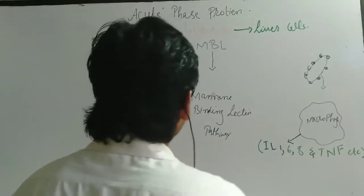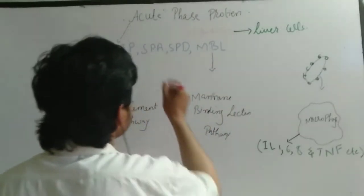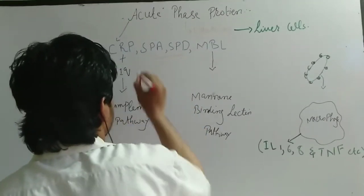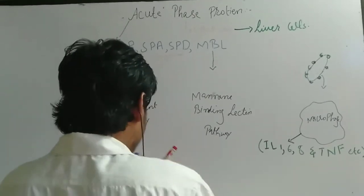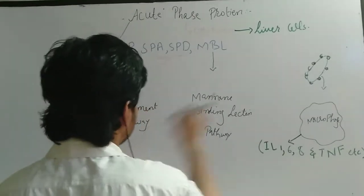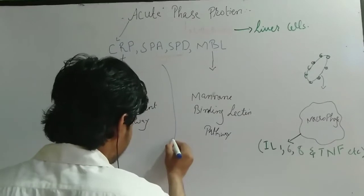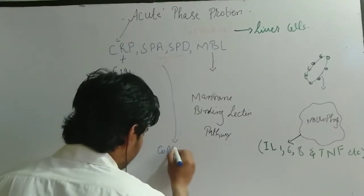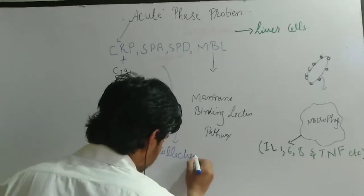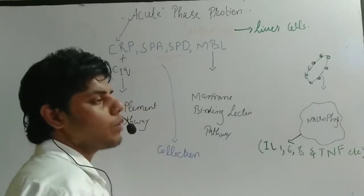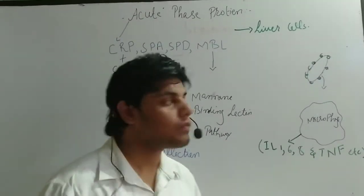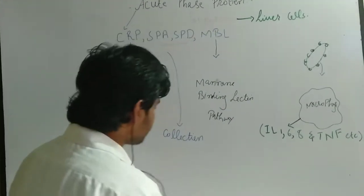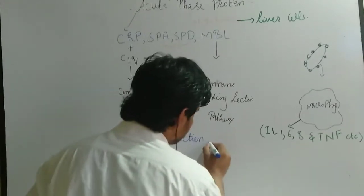In acute phase proteins, these two proteins along with C1q, these three proteins act as collectins. Collectins are proteins which are usually secreted from the macrophages. This collectin protein is composed of collagen.